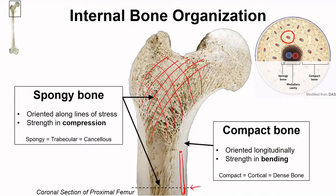While I'll continue to use the terms spongy and compact, these types of bone have other names that describe the exact same thing, and you may come across these in the future — like trabecular and cancellous for spongy bone, and cortical or dense bone for compact.